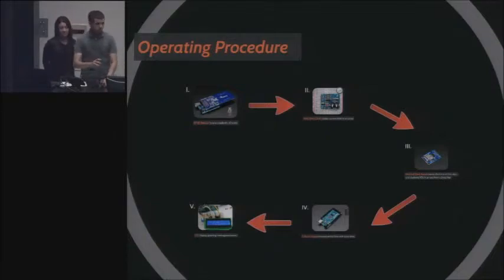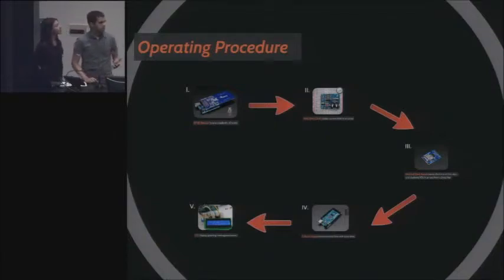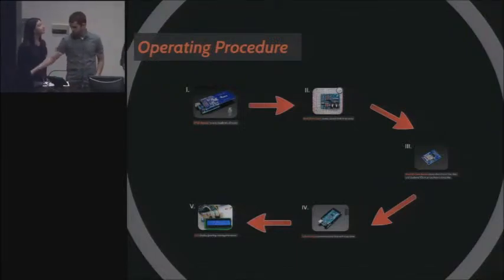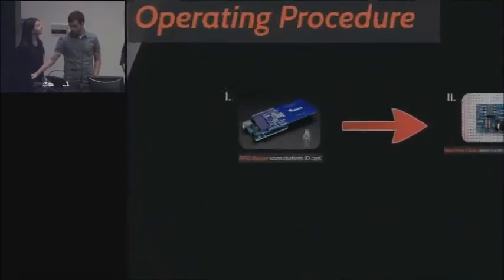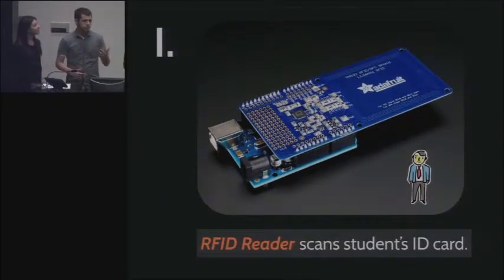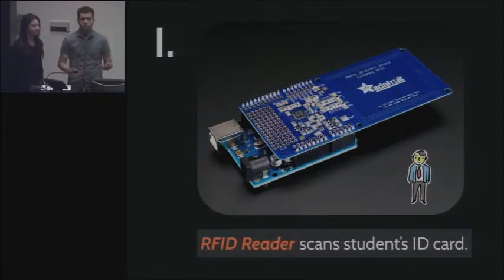While the functions and functionality of the box make sense, I'm going to explain how the parts actually came together to make it work. First, we have the RFID reader. This will read the student ID card and get the information inside it. The particular model we are using is able to read cards up to 10 centimeters away.